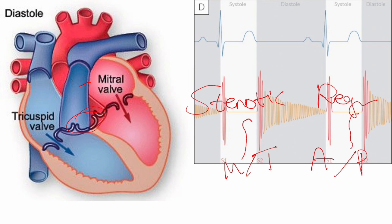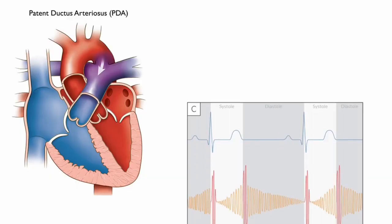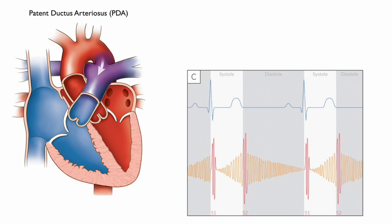So to summarize: where is the murmur tells you which valve is affected. Let's say it's mitral, over the apex. Then if he tells you it's diastolic, you need to figure out which valve should open during diastole to fill the heart — that's the mitral and tricuspid. So if the murmur is diastolic and mitral, the mitral must be stenotic or narrow.